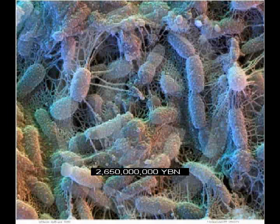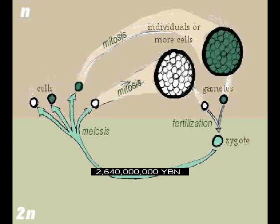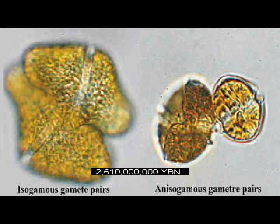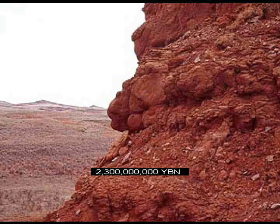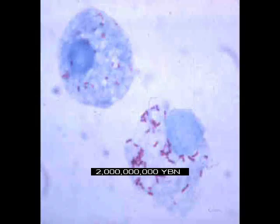Bacteria live on land. Eukaryote sex evolves. First diploid cell — two sets of chromosomes. First zygote. Chance of variety and mutation increased. Eukaryote gender. Oldest red beds — evidence of free oxygen on Earth.